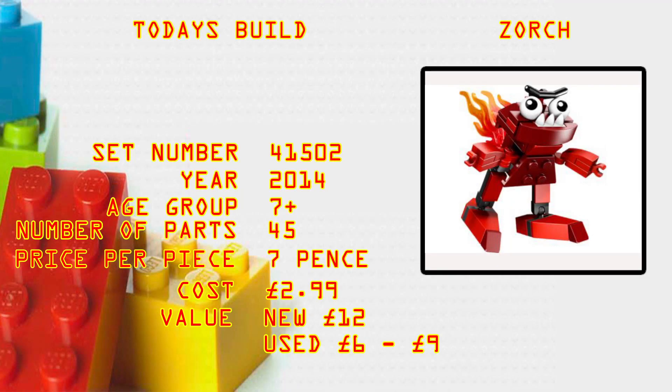What's up brick builders, today's build is Zorch, set number 41502, year it came out was 2014, age group 7 plus, number of parts 45, that's quite low for a Mixel, price per piece is 7 pence, and cost brand new in 2014 was £2.99.